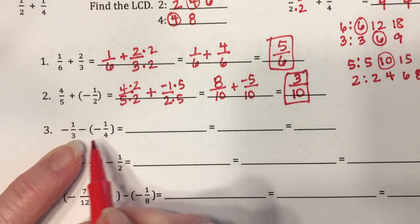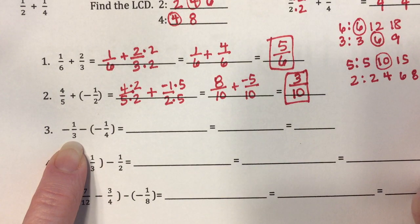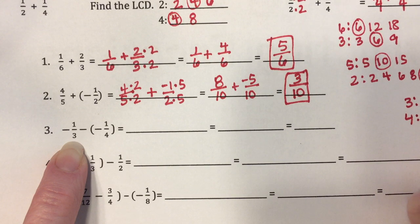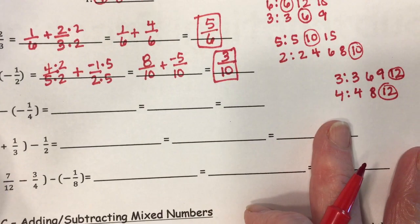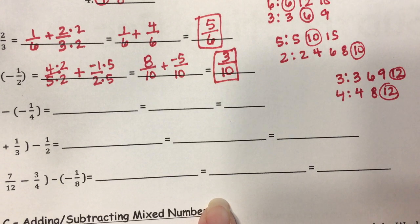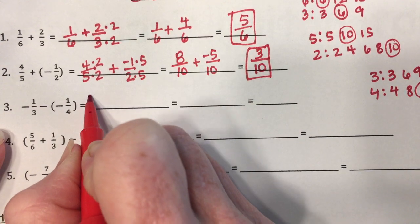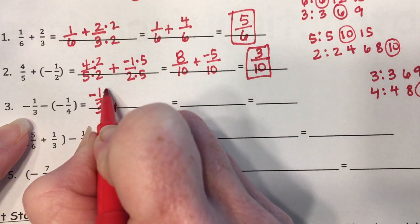Number three: negative one-third minus negative one-fourth. I'm going to start by finding my common denominator for three and four. Multiples of three: 3, 6, 9, 12. Multiples of four: 4, 8, 12. Twelve is their common multiple. Going back to rewrite the problem: for negative one-third, what times three gives me twelve? Times four. So I multiply the numerator by four as well.